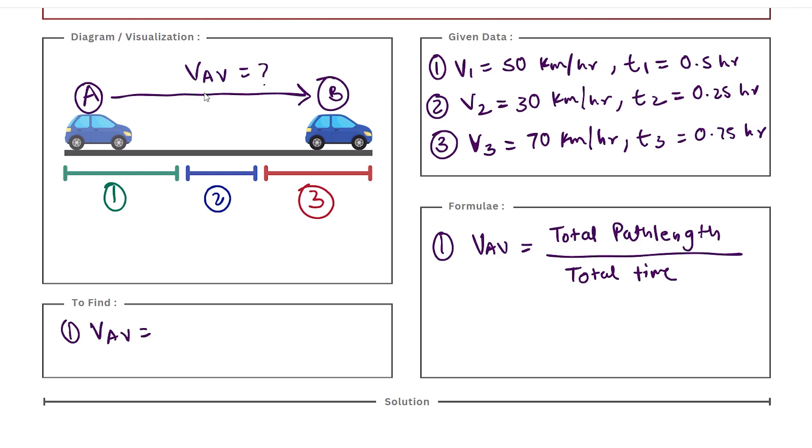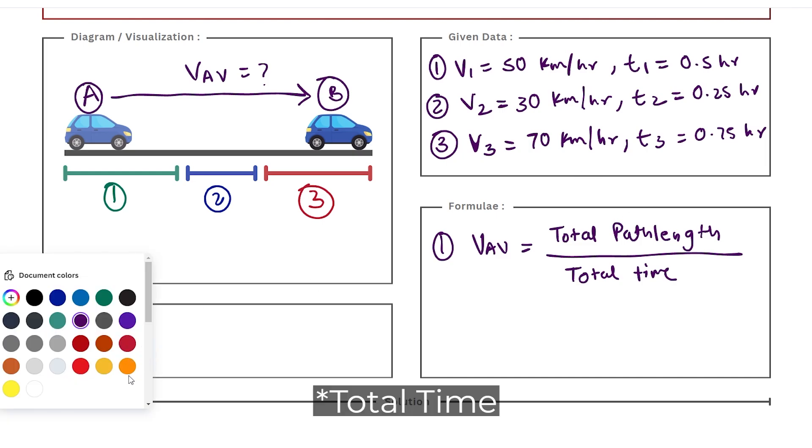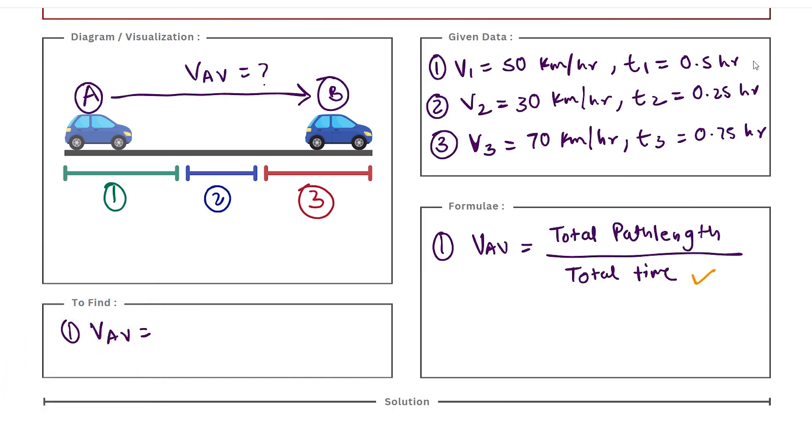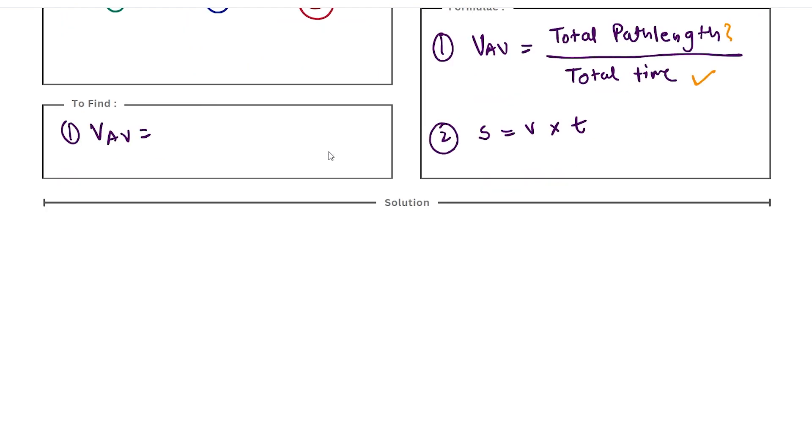Now figuring out total time is quite easy because we can simply add all our individual time slots and we get a total time, but we have no idea about path length. But that doesn't mean we can't find our path length because we studied a formula during the initial time of this chapter that is distance is given as speed into time. This is one of the most basic formulas for motion and we're going to use that formula to calculate all the individual distances that this car travels in each part and then we're going to add those distances to get a total path.